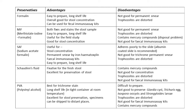SAF preservative — used for concentration technique, permanent stain especially iron hematoxylin, and immunoassay kits; easy to prepare and long shelf life. Disadvantages: adheres poorly to slides, so albumin-coated slides must be used; cannot do trichrome permanent stain; and trophozoites are destroyed. Schaudinn's fixative — excellently preserves fresh stool samples. Disadvantages: contains mercury compound, cannot do concentration technique, trophozoites are destroyed, and cannot do immunoassay.